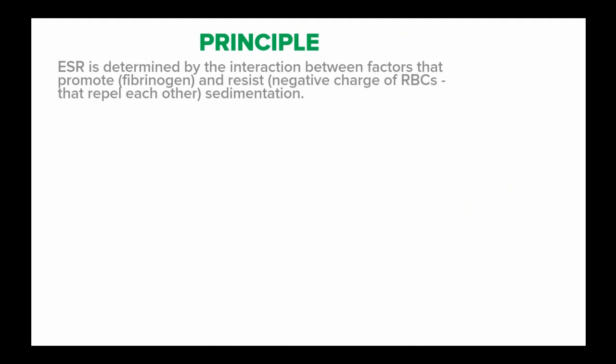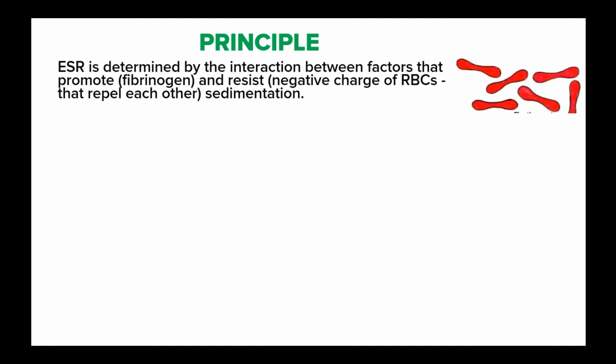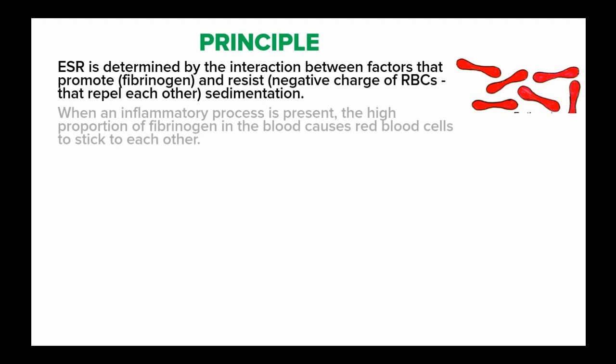What is the principle behind the ESR? The erythrocyte sedimentation rate is determined by the interaction between factors which promote sedimentation and factors which resist sedimentation. An example of a factor which promotes sedimentation is fibrinogen, and one which resists sedimentation is the negative charge surrounding the red blood cells, making them repel each other.